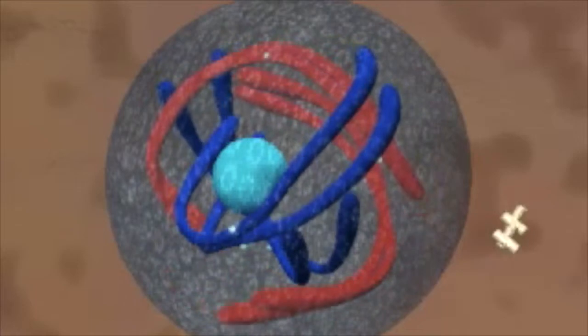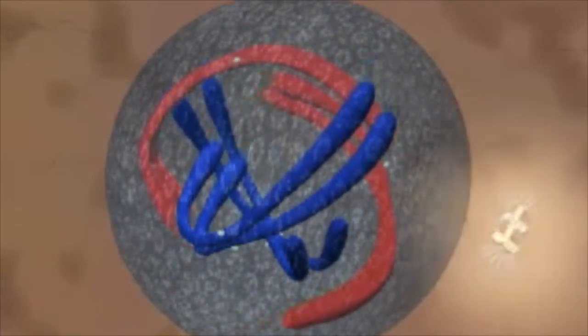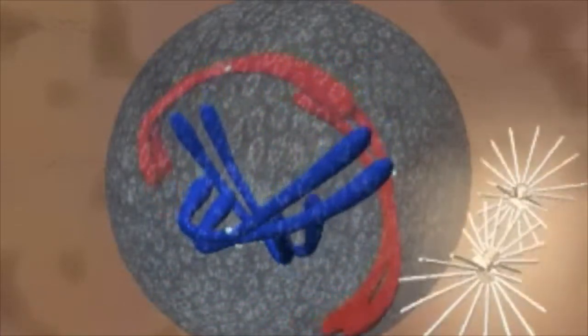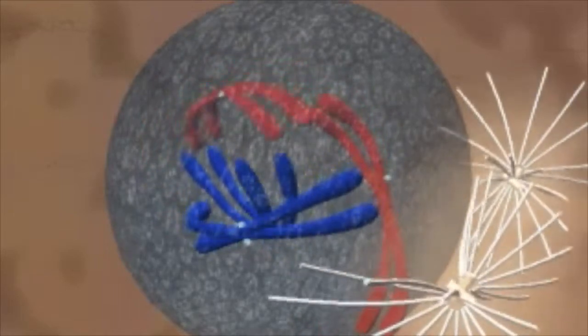During metaphase, the nuclear membrane dissolves and the sister chromatids align to the cell's equator and attach to the spindle fibers.